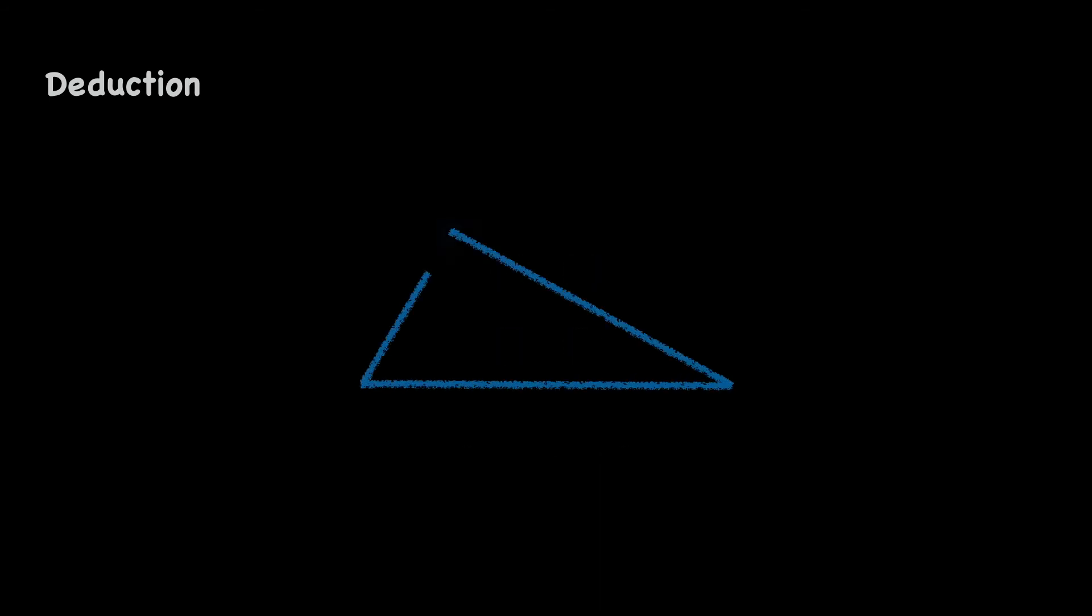A triangle necessarily has 3 sides because we cannot imagine a triangle without imagining 3 sides. And likewise, if we imagine more or less than 3 sides, then we no longer imagine a triangle.